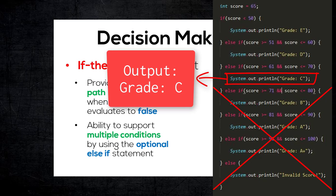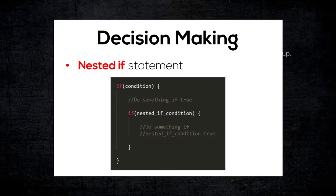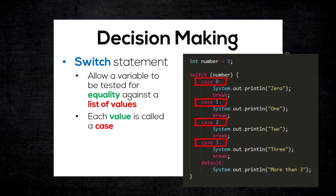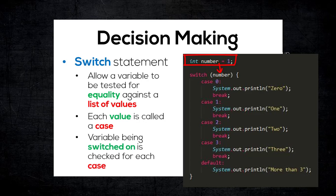In addition to that, Java programming also allows us to have nested if statements, which basically means putting one if statement inside of another. Other than the if-then and if-then-else statements, Java also provides us with another option called the switch statement. What it does is basically allow a variable to be tested for equality against a list of values, and it looks something like this. Each value is called a case, and the variable being switched on is checked for each case.